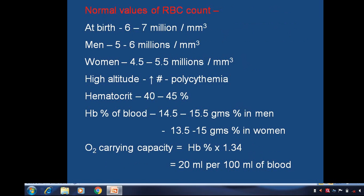The normal values of RBC count: at birth it is about 6 to 7 million per cubic millimeter; in adult males the normal range is 5 to 6 million per cubic millimeter; while in women it is 4.5 to 5.5 million per cubic millimeter. At higher altitude, RBC count increases. Hematocrit normal range is 40 to 45%. Hemoglobin is about 14.5 to 15.5 gram percent in males, and 13.5 to 15 gram percent in women. Oxygen carrying capacity is calculated by the formula: hemoglobin percent multiplied by 1.34.